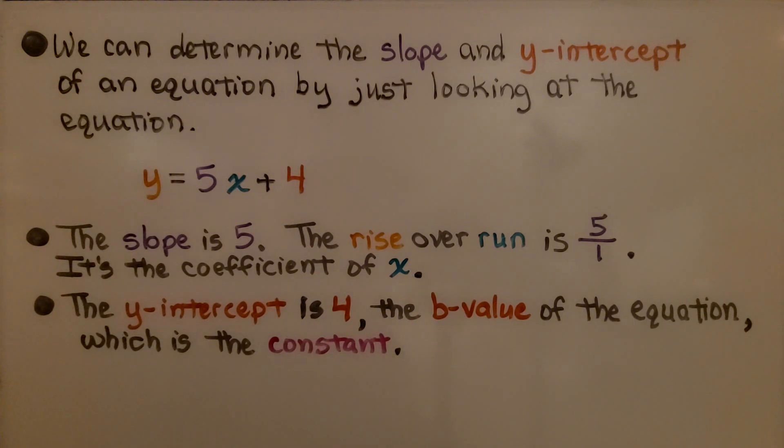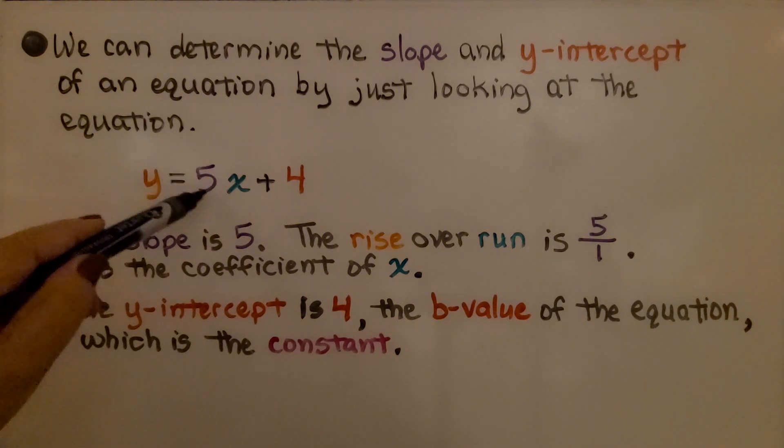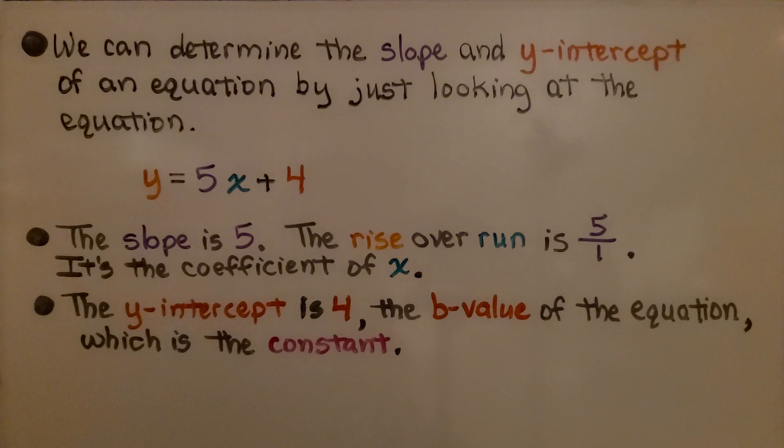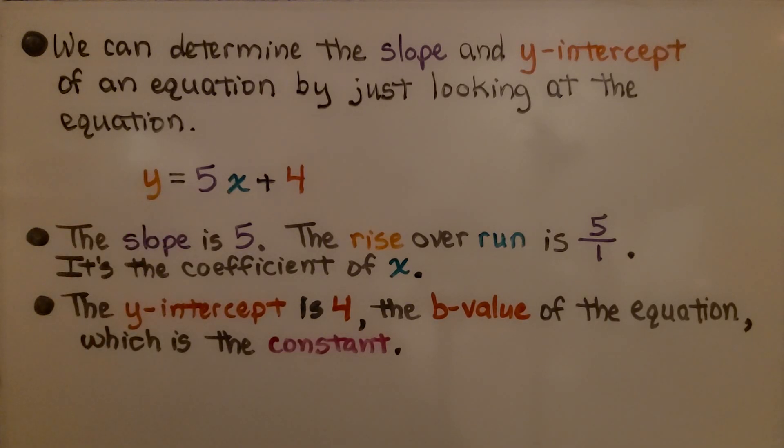We can determine the slope and y-intercept of an equation by just looking at the equation. Here we have y equals 5x plus 4. We know that this value, this would have been the m value, that's the slope. The slope is 5. That means the rise over run is 5 over 1. It's the coefficient of x. The y-intercept is 4, the b value of the equation, which is the constant.